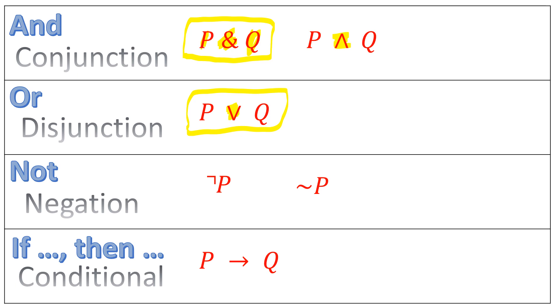We also have the negation, which is a not. We symbolize it this way, or with this tilde. It is not the case that P.